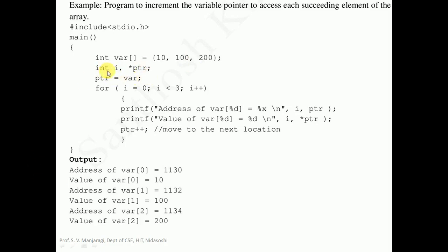Here we want to access array elements using pointers. In the next line we are declaring an integer type variable i and a pointer variable ptr. It is declared with a data type, then asterisk, then variable name. So i is an ordinary integer variable and ptr is a pointer to an integer - the star makes ptr a pointer, so ptr can hold the address of another variable. In the next line, the array has been assigned to ptr, that is ptr is equal to var. We already studied that an array has a base address - the starting address of the array, that is the address of the array's first element, is called the base address. That will be assigned to ptr.